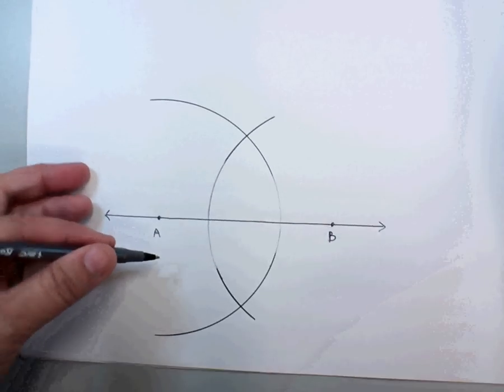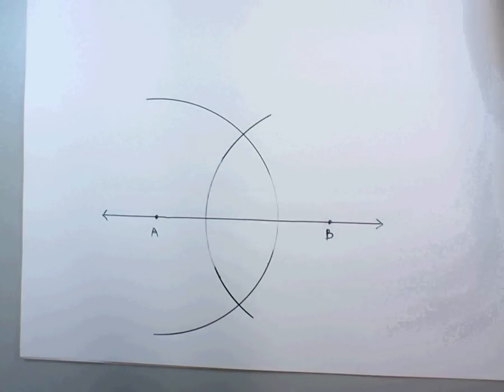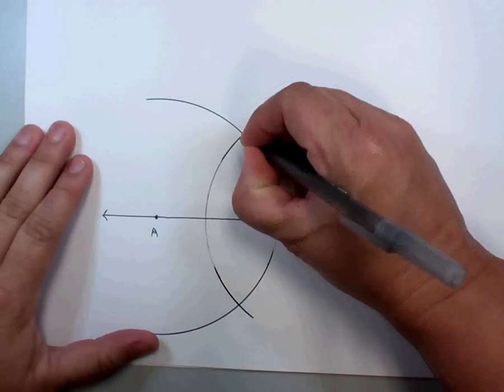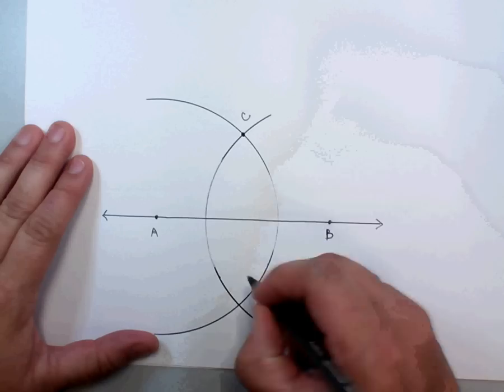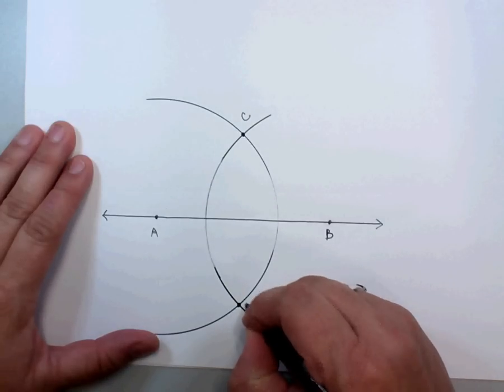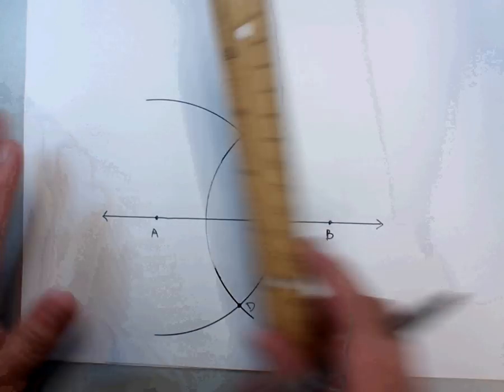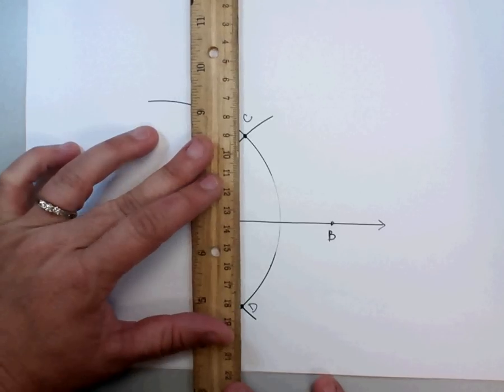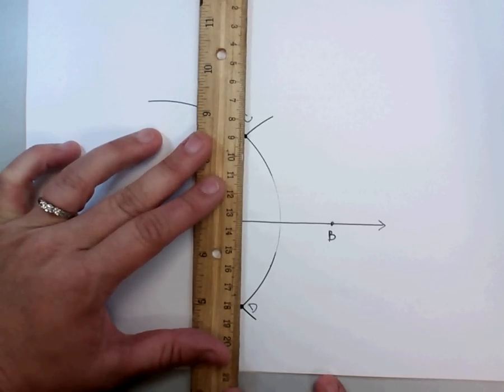At this point, we have something that looks like this. We're going to name this point C, and their intersection here is going to be point D. We can take our straight edge then and connect points C and D to create a new segment.